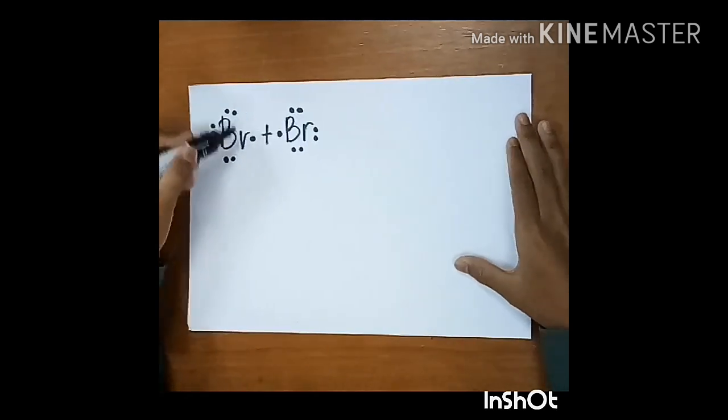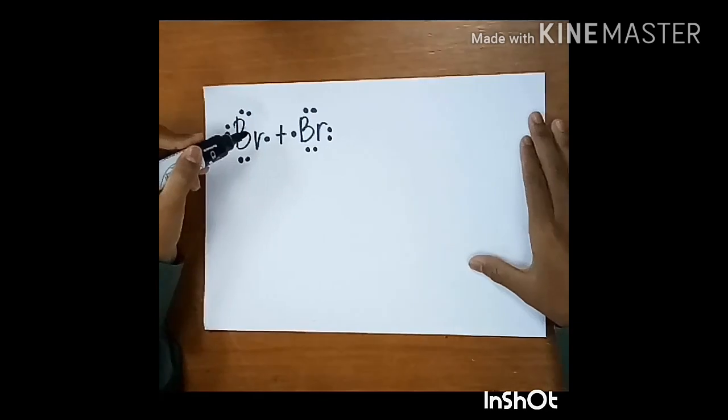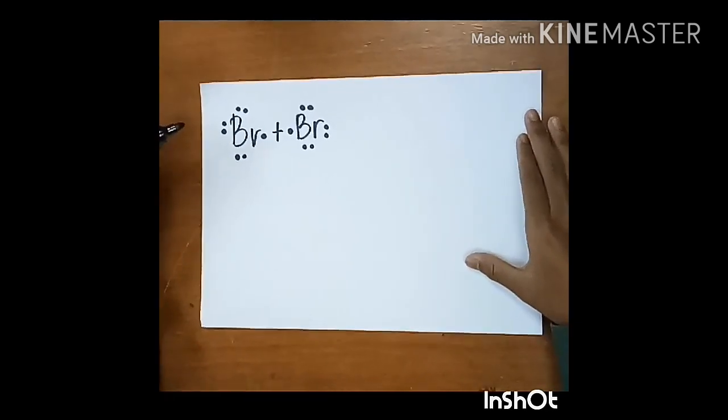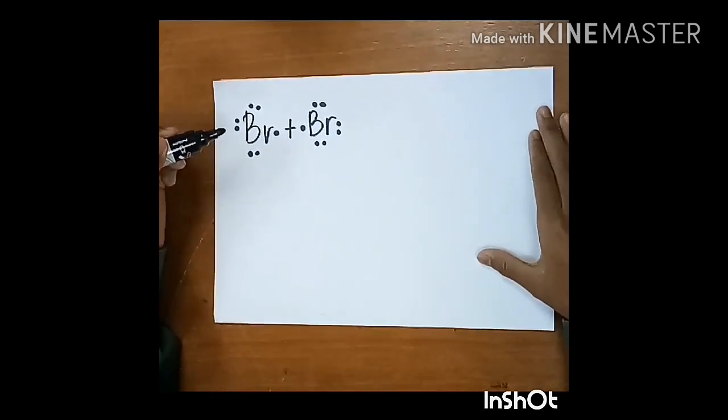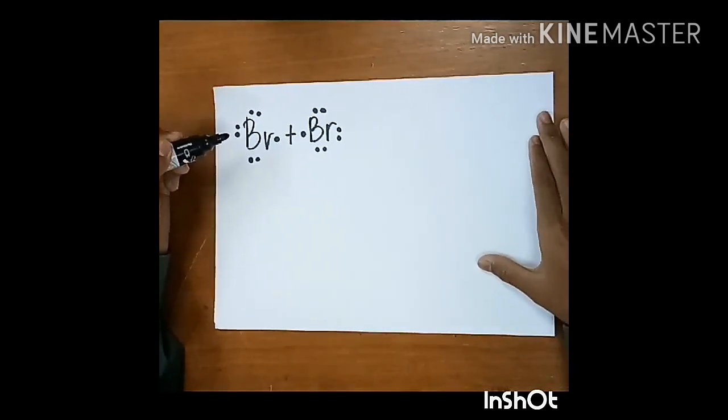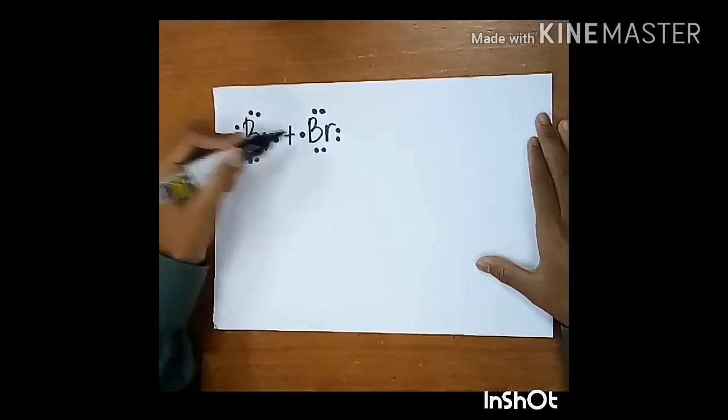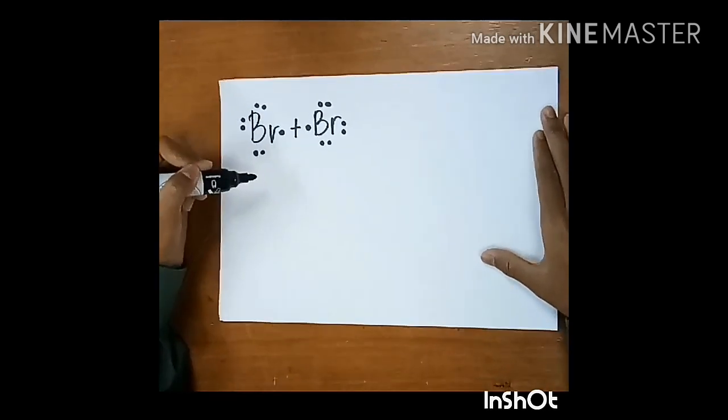As we can see here, both of the bromine atoms need one more electron to achieve the noble gas configuration, which we already know consists of eight valence electrons. So, by sharing a pair of electrons, each bromine will be able to achieve the noble gas configuration.